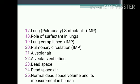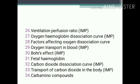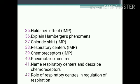Short notes continued: 26. Ventilation-perfusion ratio. 27. Oxygen-hemoglobin dissociation curve. 28. Factors affecting oxygen dissociation curve. 29. Oxygen transport in blood. 30. Bohr effect. 31. Fetal hemoglobin. 32. Carbon dioxide dissociation curve. 33. Transport of carbon dioxide in the body. 34. Carbamino compounds. 35. Haldane's effect. 36. Explain Hamburger's phenomenon. 37. Chloride shift.